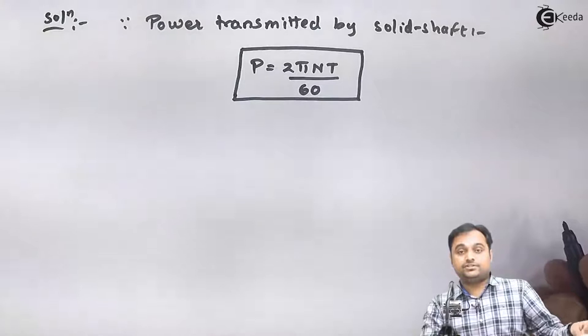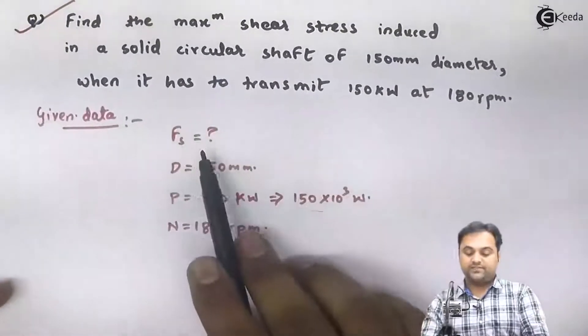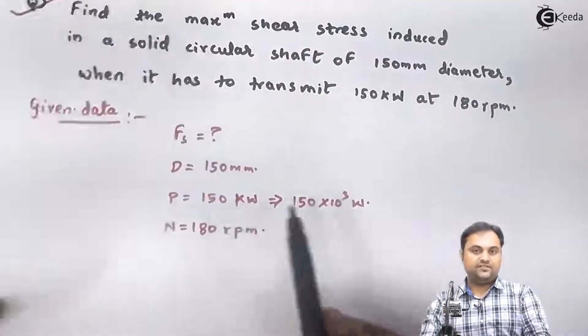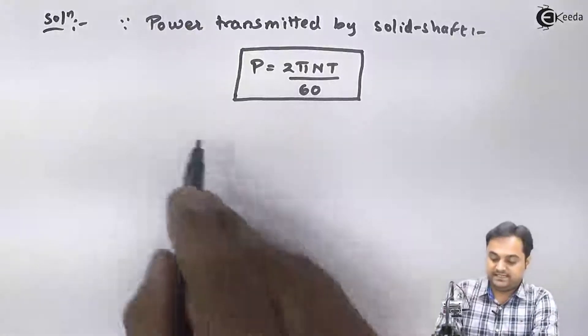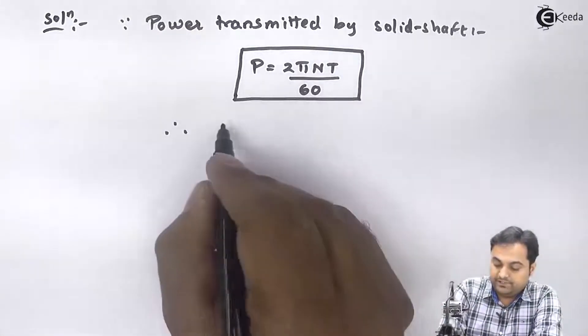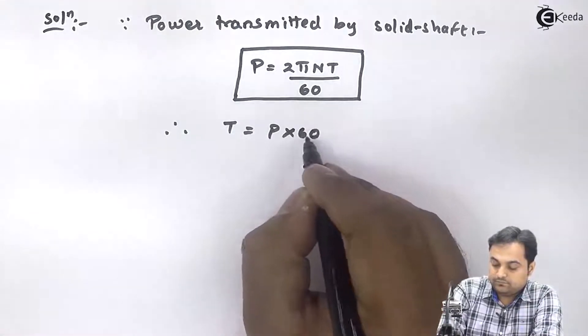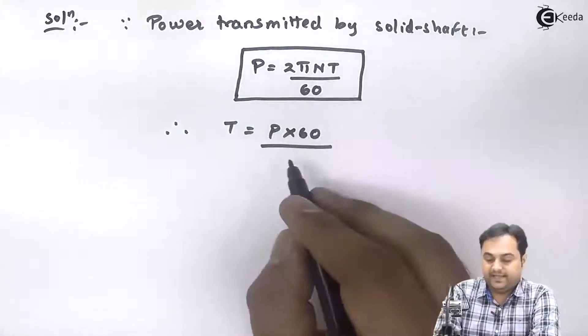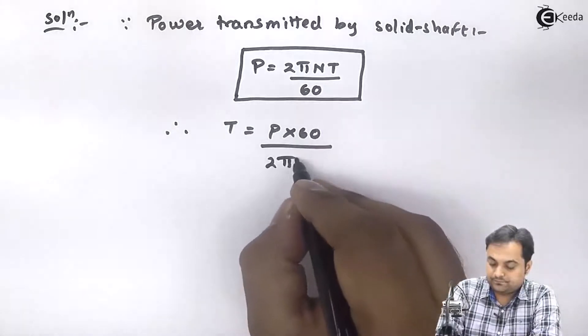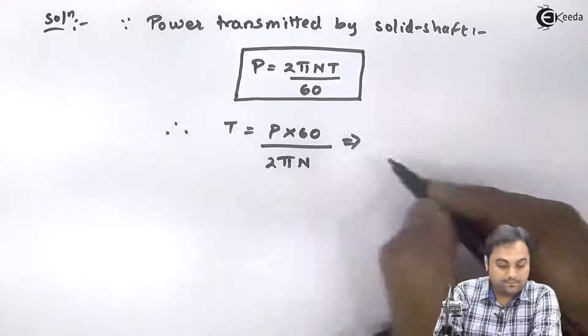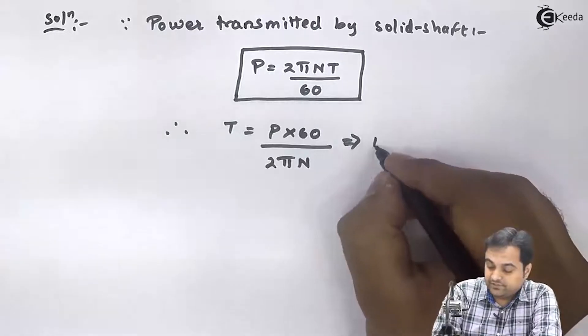Now the question is we have to calculate FS, power is given. So I will say that therefore capital T, that is torque, is equal to P into 60 upon 2 pi N. Power it is 150 into 10 raise to 3.